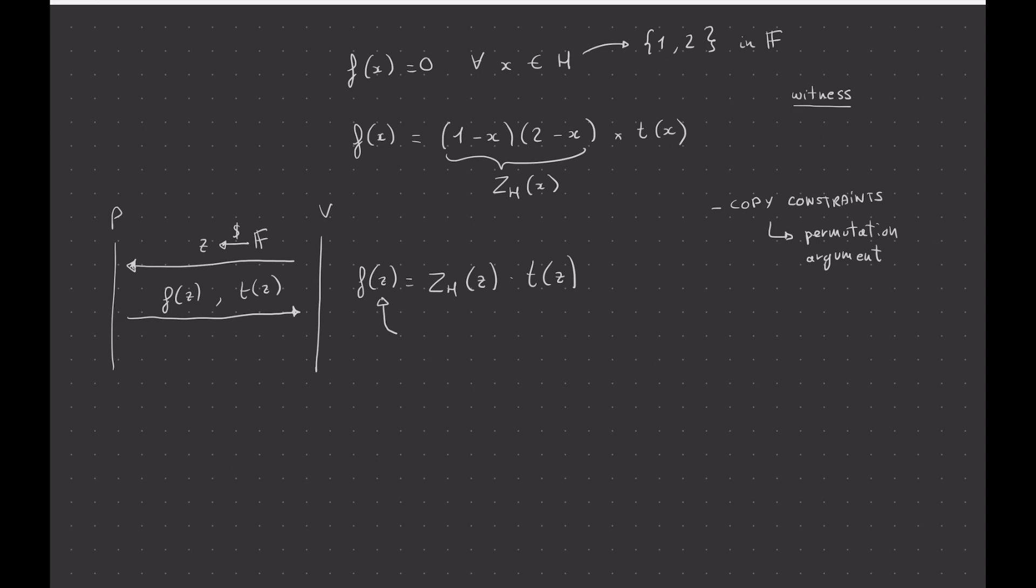So the other thing that's kind of weird here is that the prover is sending you f(z), but f(z) could be anything, right? Actually, f(z) and t(z) could be both 0. And when you check that, you're checking that 0 is equal to something times 0, which is kind of dumb.